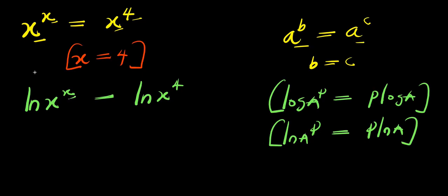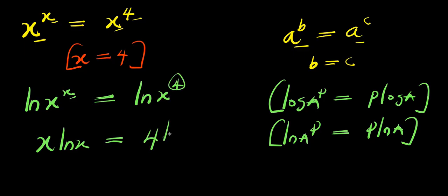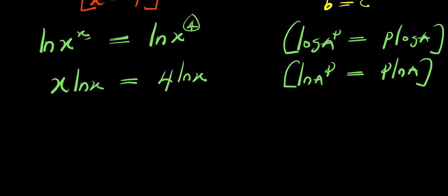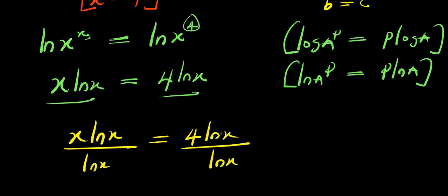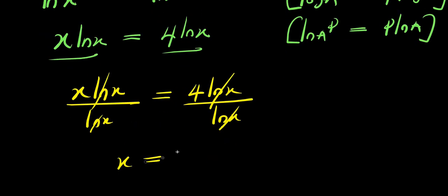So that means the x comes in front, giving us x times natural log of x equals 4 times natural log of x. We can divide both sides by ln x — x times ln x divided by ln x equals 4 times ln x divided by ln x. The ln x cancels, giving us x equals 4.